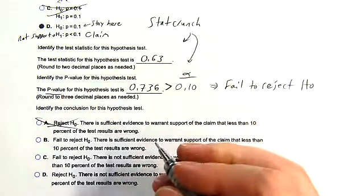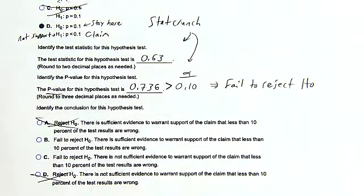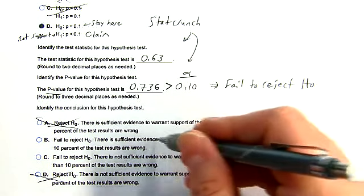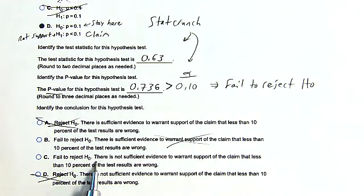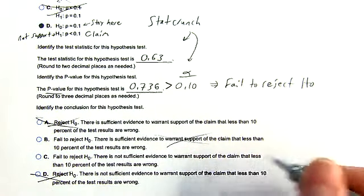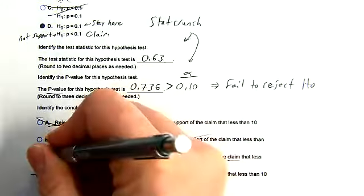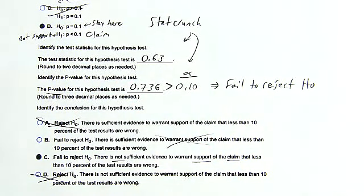Running through StatCrunch, the test statistic is 0.63 and the p-value is 0.736. Comparing to alpha = 0.10: 0.736 is clearly bigger than 0.10. Whenever the p-value is greater than alpha, you fail to reject the null hypothesis. We're staying with H0, not supporting the alternative or their claim. The conclusion: 'Failed to reject H0 — there is not sufficient evidence to warrant support of the claim.' It's probably closer to 10% are false tests, not less than that.